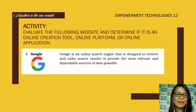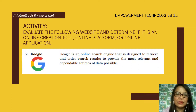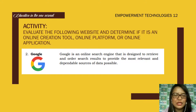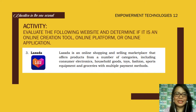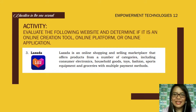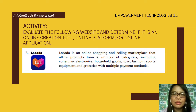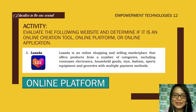Number two: Google is an online search engine designed to retrieve and order search results to provide the most relevant and dependable sources of data possible. Is it a tool, platform, or application? Correct — it's an online platform. Number three: Lazada is an online shopping and selling marketplace that offers products from categories including consumer electronics, household goods, toys, fashion, sports equipment, and groceries with multiple payment methods. Correct — it's an online platform.